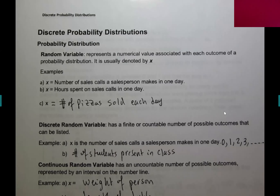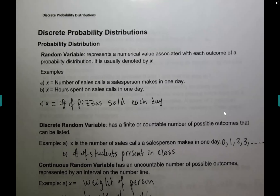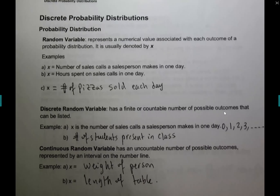Discrete is simply a whole number — something you can count: one, two, three, four — and it could be zero as well. For example, the number of students present in class at any time could be zero, one, two, three, all the way up to twenty-nine students. That is what we call discrete.